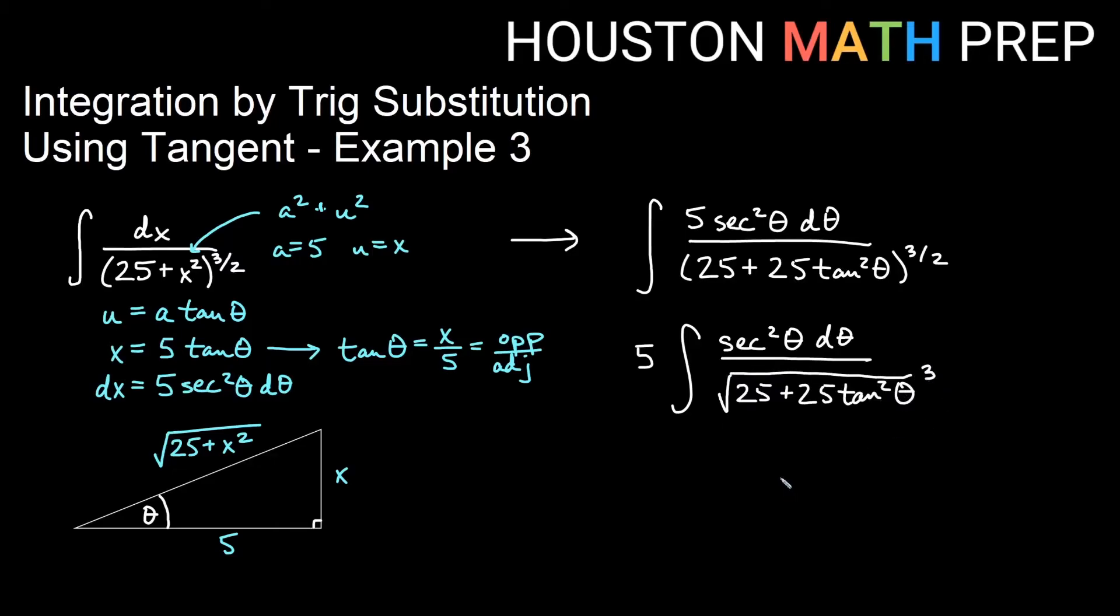So the first thing that we will do, I think, is maybe factor out our 25. We can see a little bit better what's going on.